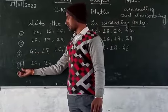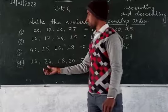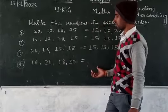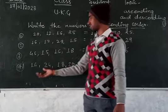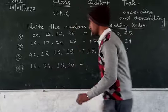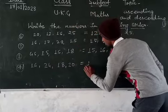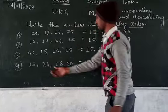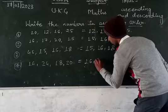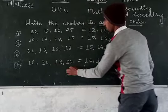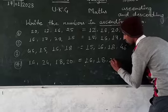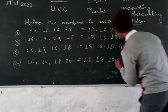Question number 4. The numbers are 16, 24, 18, and 23. The smallest number is 16. Then the next biggest number is 18, then 20, then 24.